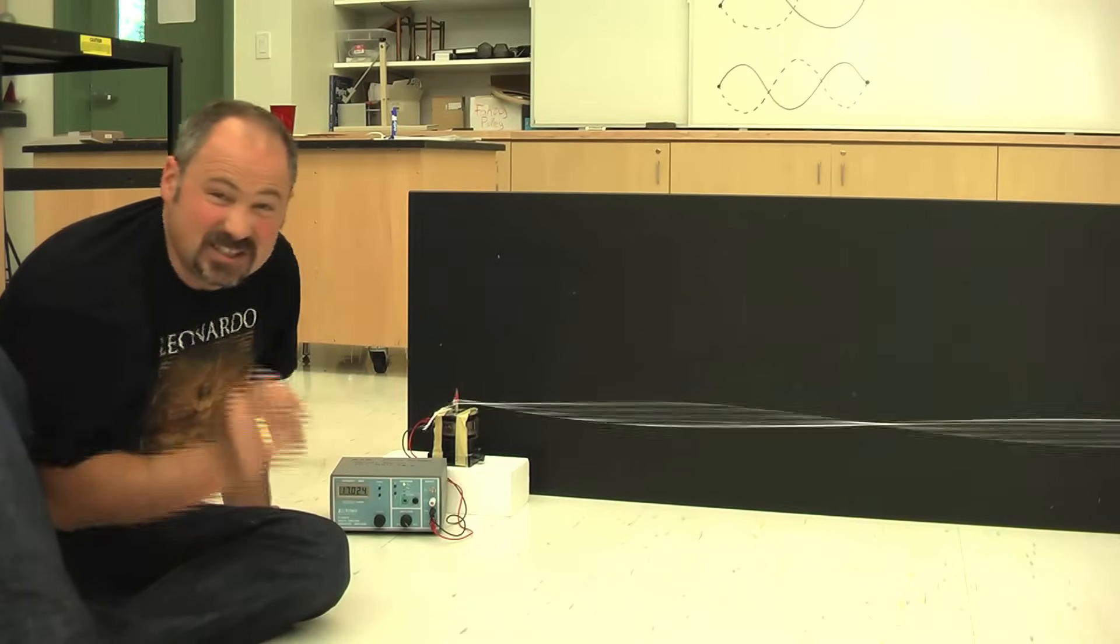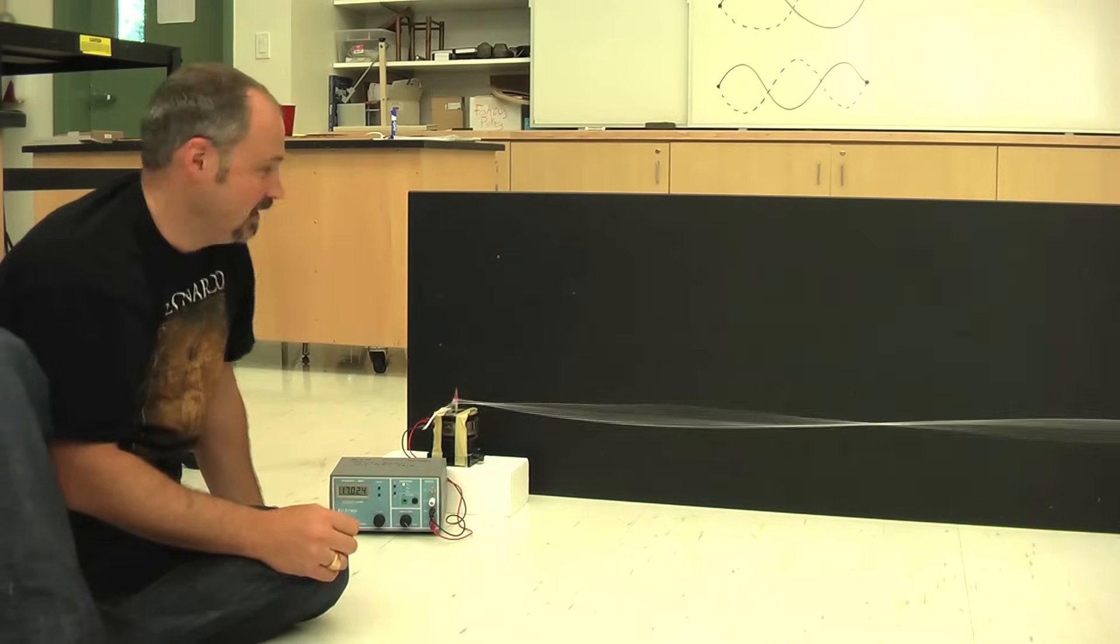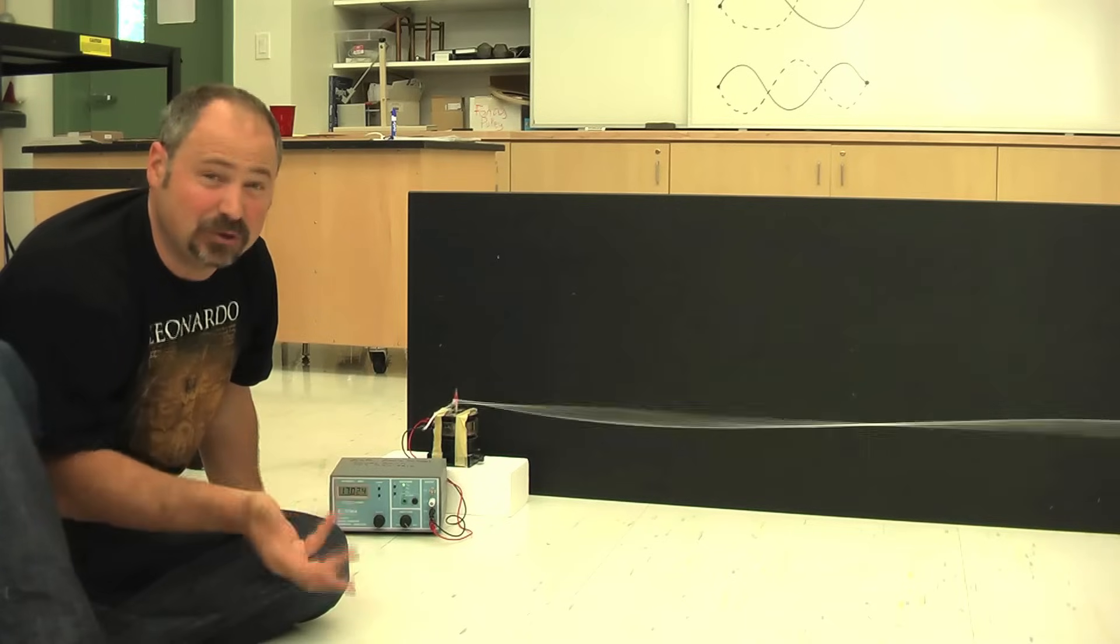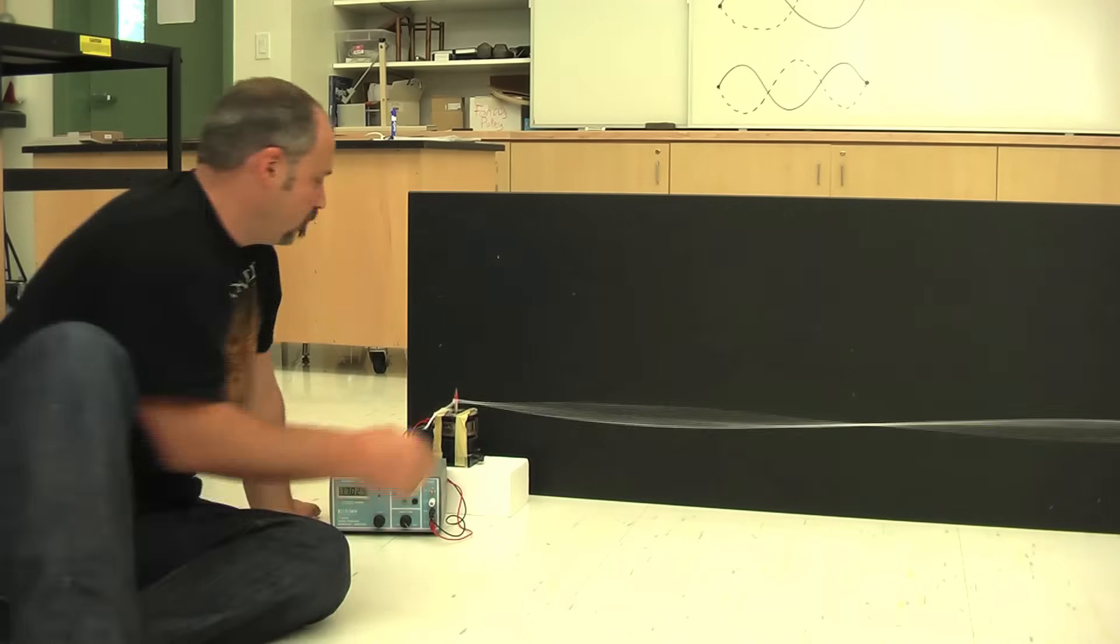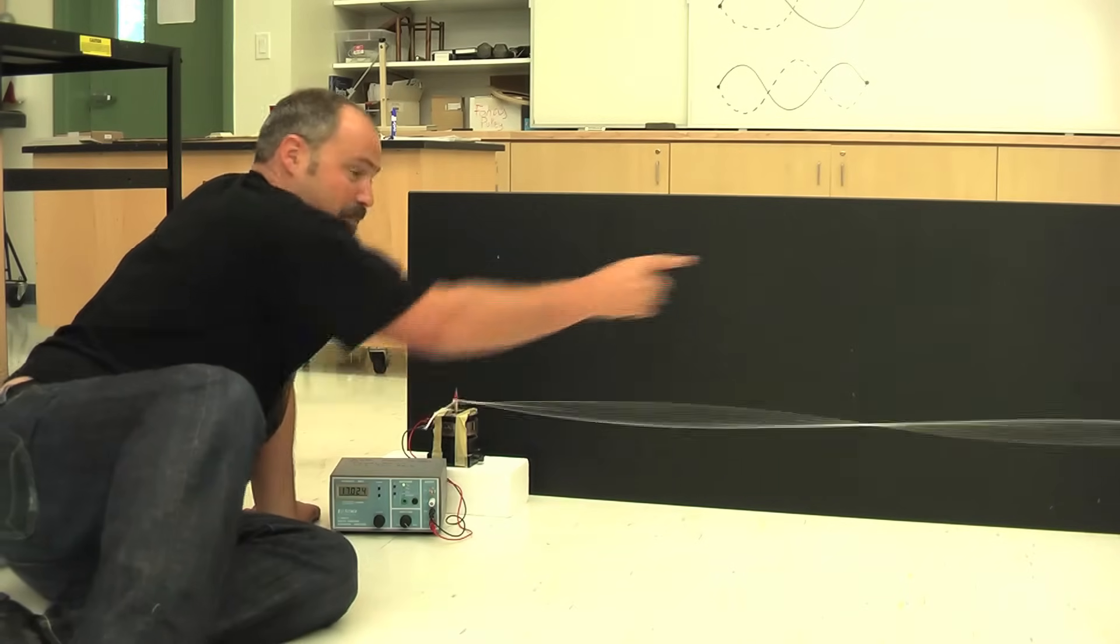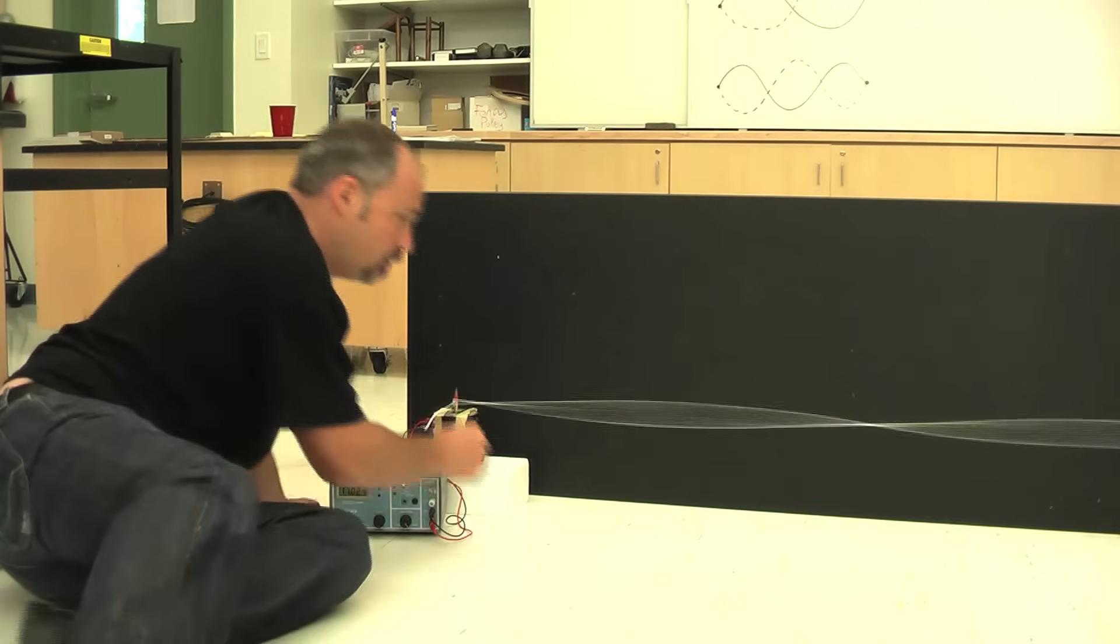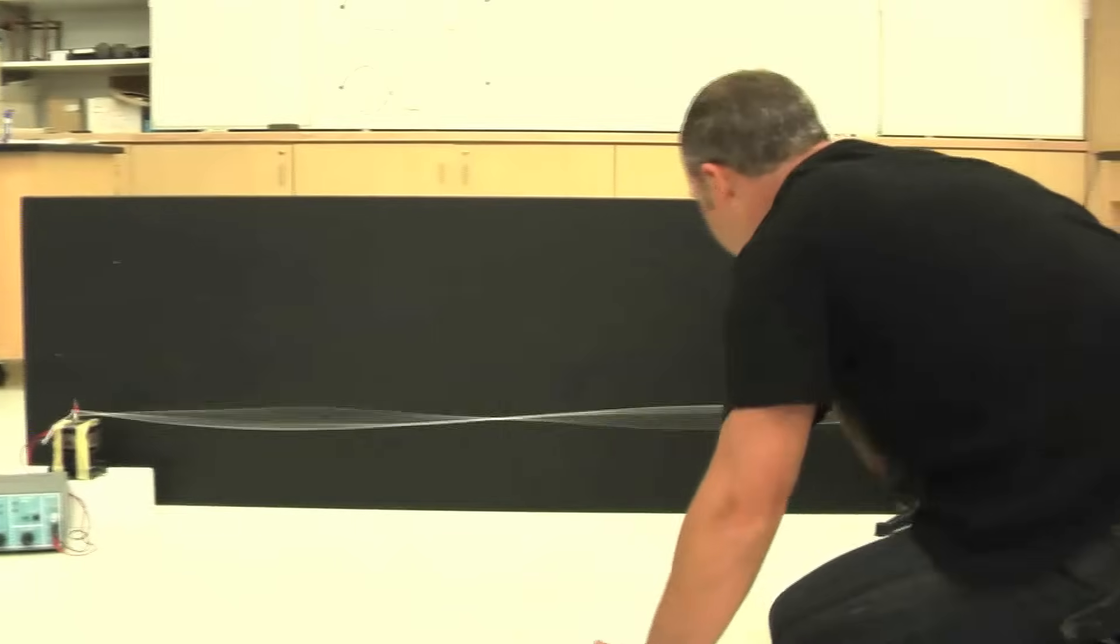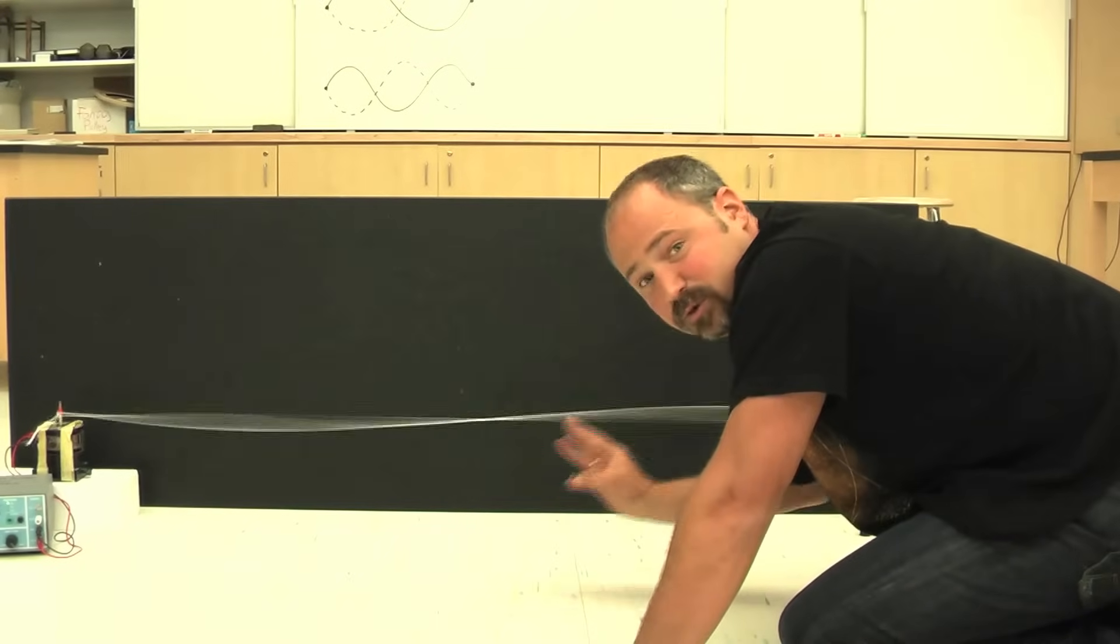So here we have what's called the second harmonic. It's the second possibility for a standing wave for a string that's held at both ends. Because notice, this is a node, this is a node, and the middle is a node. So we have three nodes for this wave.